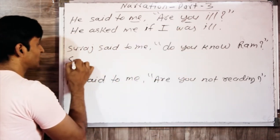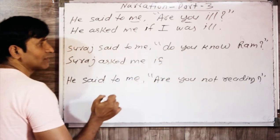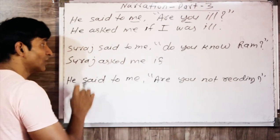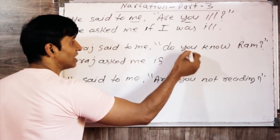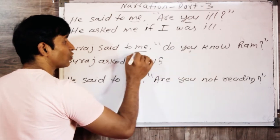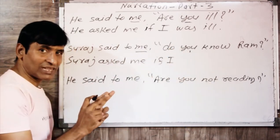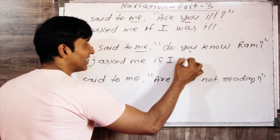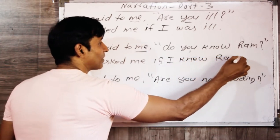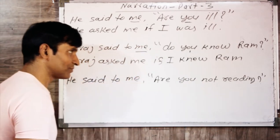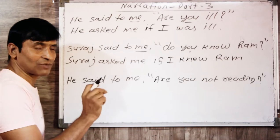Suraj said to me, 'Do you know Ram?' In indirect speech: Suraj asked me if I knew Ram. Here, 'Do you know Ram' is present indefinite tense. The second person object 'you' changes to 'I'. In past indefinite tense, the verb takes its second form — so it becomes: Suraj asked me if I knew Ram.